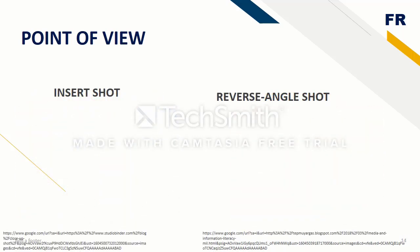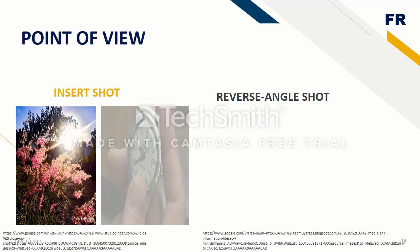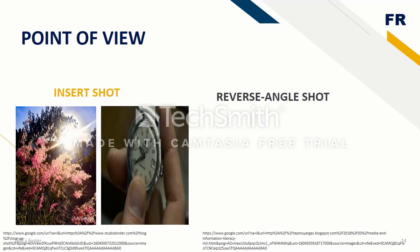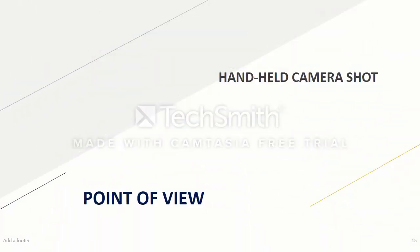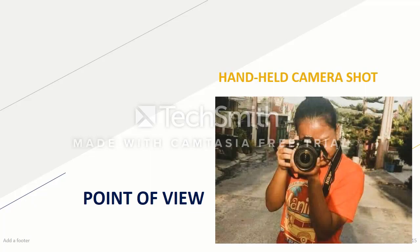The insert shot is any shot whose sole purpose is to focus the viewer's attention on a specific detail within a scene. These shots are often placed from the point of view of a character, suggesting that we see what the character sees during a moment of concentration. The reverse angle shot is a shot taken from an angle roughly 180 degrees opposite of the previous shot. The handheld camera shot is a shot taken with the camera being supported only by the operator's hands and shoulders.